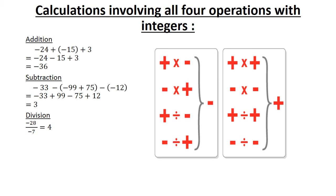Division: negative 28 divided by negative 7 equals 4. Because remember, a negative divided by a negative is equal to a positive. Negative 245 divided by negative 5 equals negative 49.